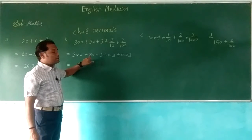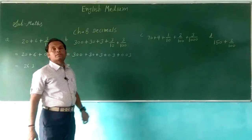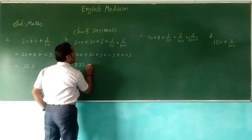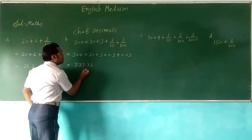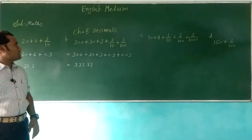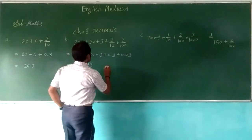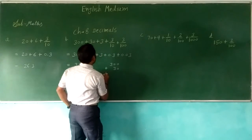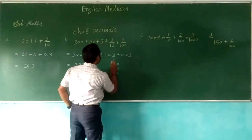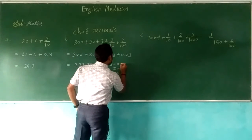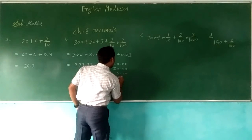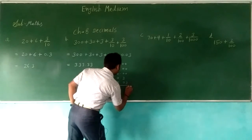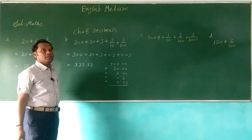300 plus 30 plus 3 plus 0.3 plus 0.03. So 0.3 plus 0.03 gives us 0.33, and the final answer is 333.33.